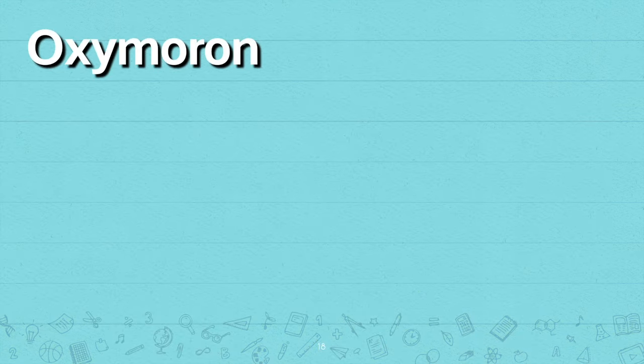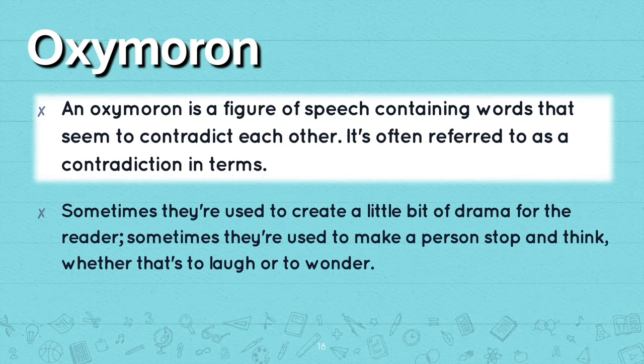Now let's look at oxymoron. An oxymoron is a figure of speech containing words that seem to contradict each other — it's often referred to as a contradiction in terms. Sometimes they're used to create a little bit of drama for the reader; sometimes they're used to make a person stop and think, whether that's to laugh or to wonder.